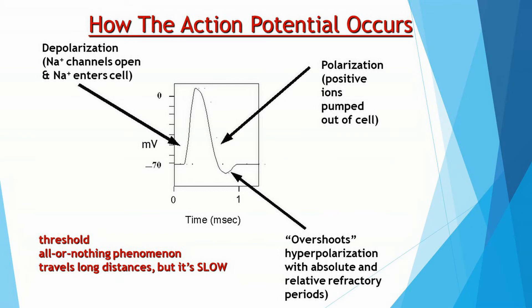The action potential has a threshold — it has to be stimulated to threshold in order for an action potential to occur. If I stimulate it too little, nothing happens. It's an all-or-nothing phenomenon: if I stimulate it enough, then I do see the entire sequence of events — up, down, down really far, and then back to normal. The threshold is about 15 millivolts. If I stimulate the cell less than that amount, the signal just dies out — there is no signal traveling along the length of that neuron. However, if I do stimulate it enough, it's an all-or-nothing phenomenon and the entire sequence occurs.